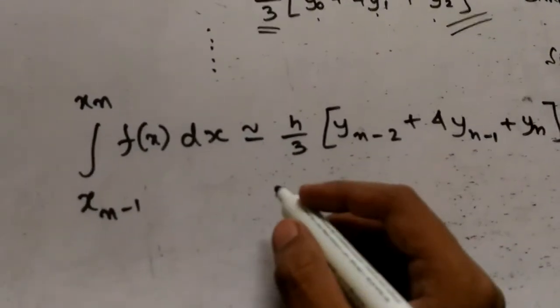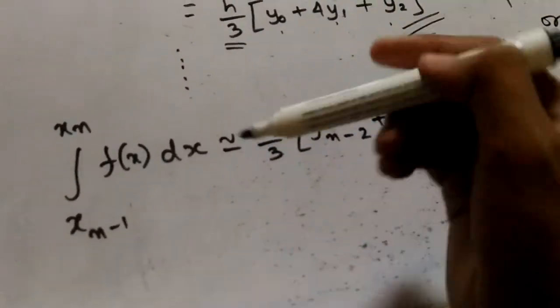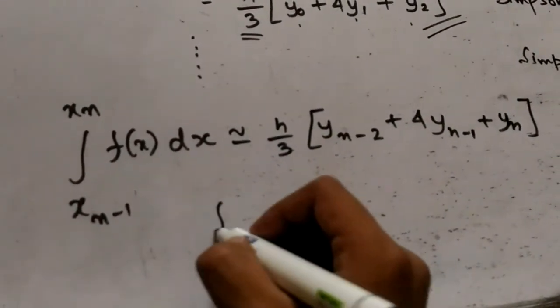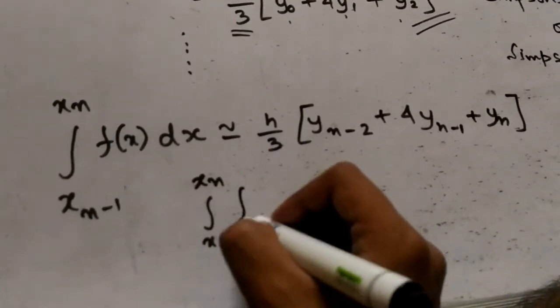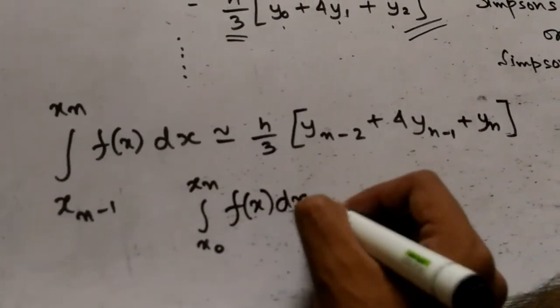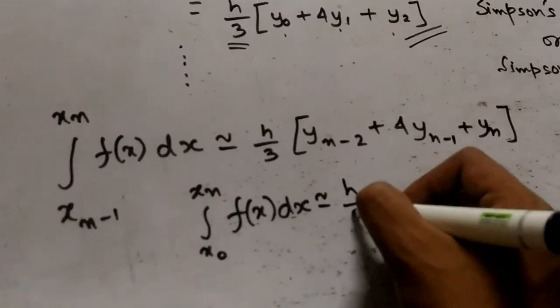On adding all these terms, I will get the integral from x0 to xn of f(x)dx approximately equal to h/3 times y0 plus yn plus 4 times y1 plus y2 plus dot dot dot up to yn-1.